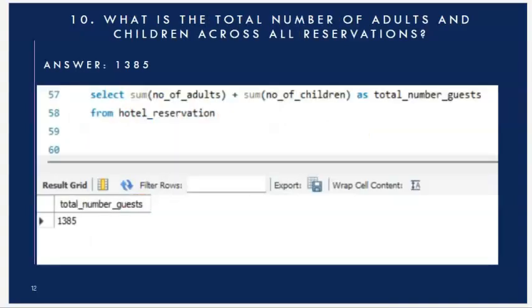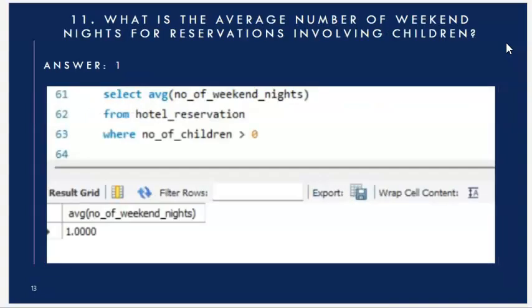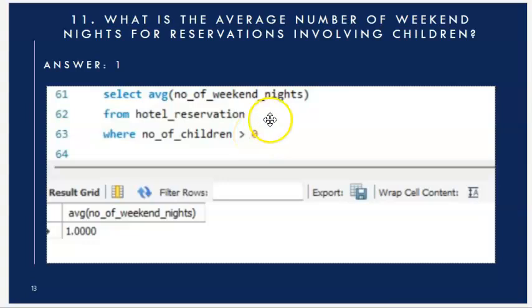Question 10: what is the total number of adults and children across all reservations? I summed the number of adults and children from the dataset and got 1385. Question 11: what is the average number of weekend nights for reservations involving children? I filtered where children is greater than zero and averaged the weekend nights — the answer is 1.